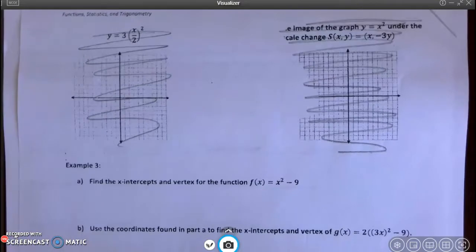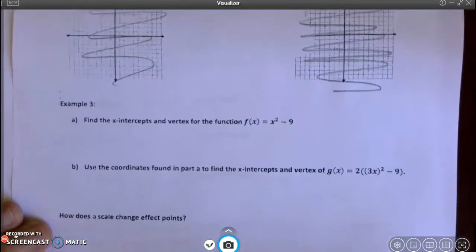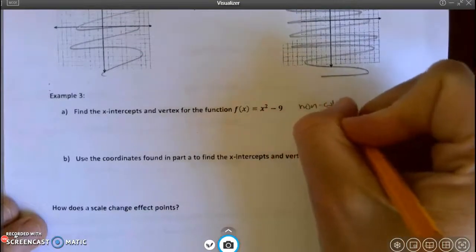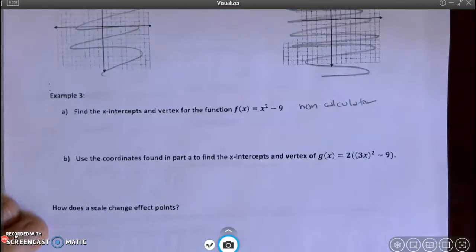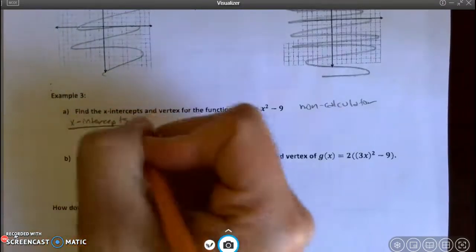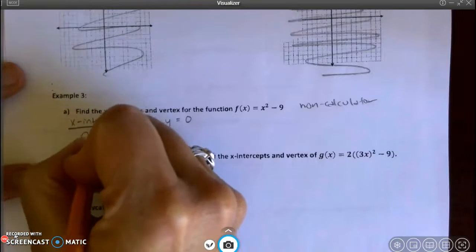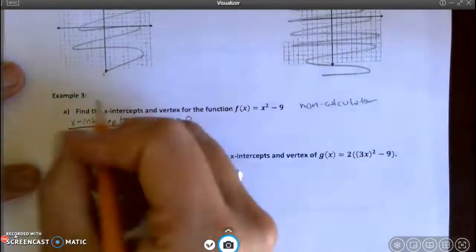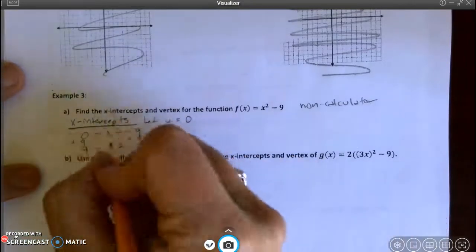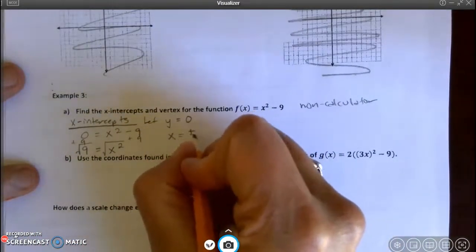All right. So let's look now at example 3. Example 3 asks us to find the x-intercepts and the vertex for the function x squared minus 9. Now these are intended to be non-calculator problems. So we are going to focus on how we could do this without a calculator. So first of all, x-intercepts are found by letting y equal 0. So 0 equals x squared minus 9. I could add 9 to both sides. And I get that 9 equals x squared. In order to solve for x, I'm going to take the square root of both sides. And I get that x equals plus or minus 3.